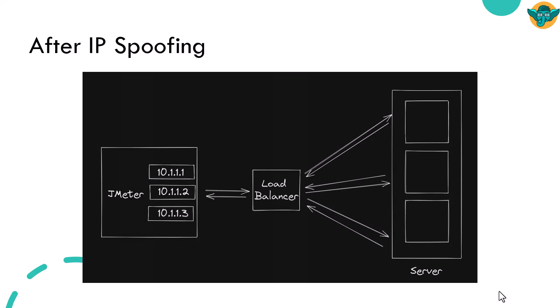Now, after IP spoofing is enabled, where you will have multiple source addresses, you will hit your load balancer. Since the traffic is coming from various different source addresses, the load balancer will distribute the traffic accordingly. So using IP spoofing, you can test your functionalities, load balancer features, and other aspects of your application end to end successfully.